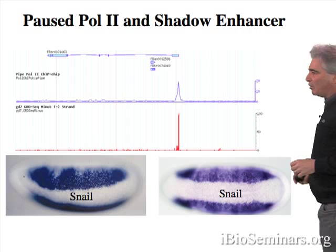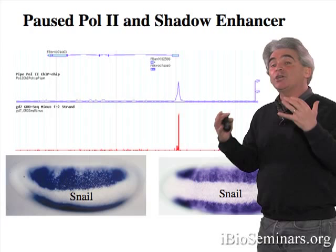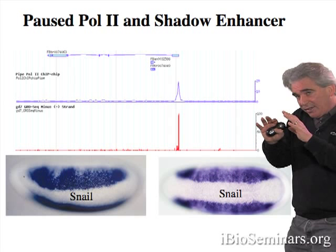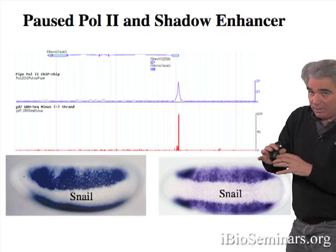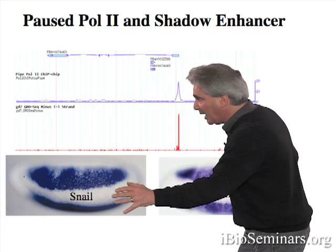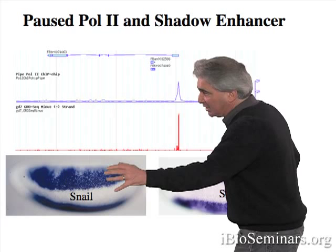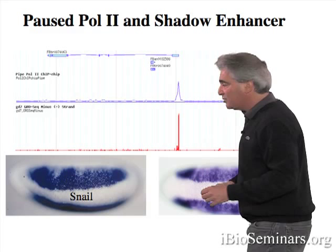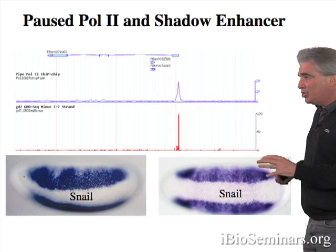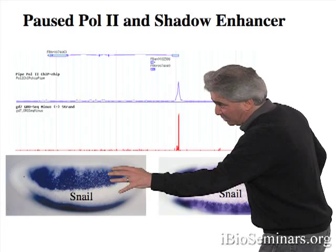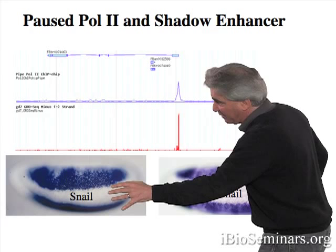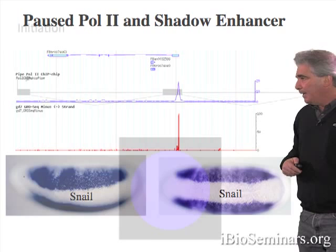SOG, like snail, comes on quite quickly and uniformly in the early embryo. SOG beats snail to the punch and is turned on a little bit before there are critical levels of the snail repressor. So initially, SOG is turned on in both the ventral regions that will form the mesoderm as well as the lateral regions that will form the neurogenic ectoderm. A graduate student, Jacques Bothma, has done high-resolution imaging of this loss of SOG expression in the ventral mesoderm due to the snail repressor.